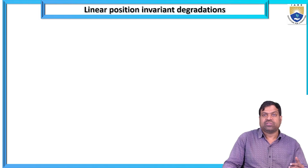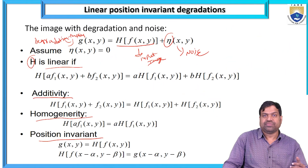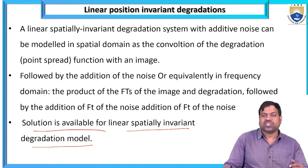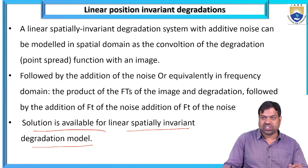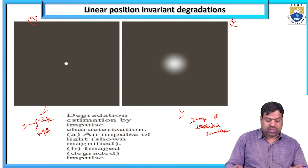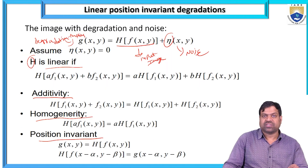This covers linear position invariant degradation. A linear spatially invariant degradation system: additive noise can be modeled in spatial domain as a convolution of the degradation point spread function with an image, followed by the addition of noise or equivalently in the frequency domain. Figure A is an impulse of light, Figure B is the image of the degraded impulse, and the image with degradation and noise is G(x,y) = H[f(x,y)] + ν(x,y).